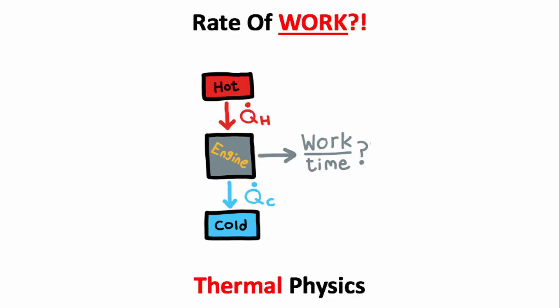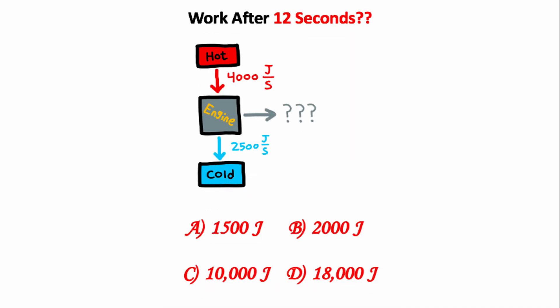We are going to solve this engineering problem in less than 60 seconds. We have a heat engine, and we want to know how much work this heat engine does after 12 seconds. This engine absorbs a total of 4000 joules of heat every second. Since the waste heat discard rate is 2500 joules per second, that means the rate at which this engine does work is 1500 joules per second. I know this because these two numbers have to add to give you this number. To calculate the work that's done after 12 seconds, I just need to take 1500 joules per second and multiply that by 12 seconds.